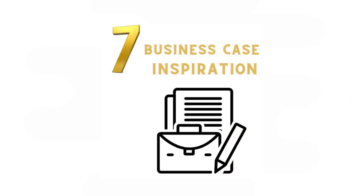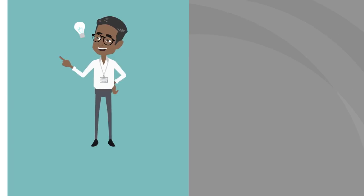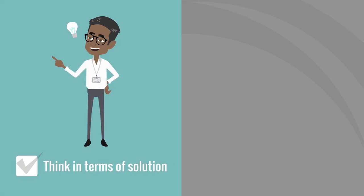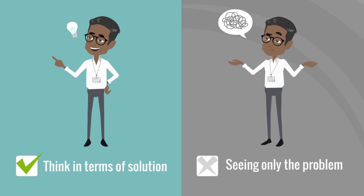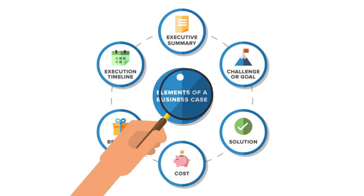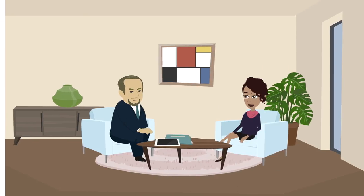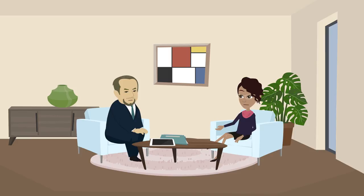Technique number seven: business case inspiration. Using a famous business case is a great way to get your team to think in terms of solutions instead of seeing only the problem. Start with the as-is business case, then replace their issue with your problem or product. Work through to resolution.